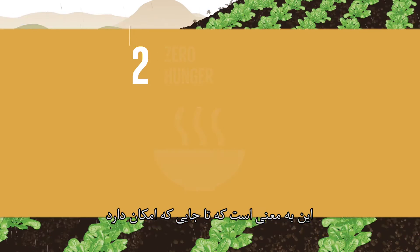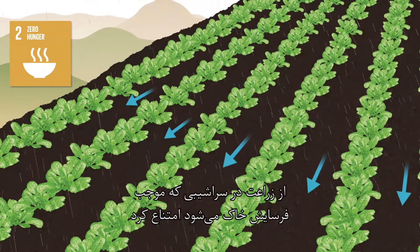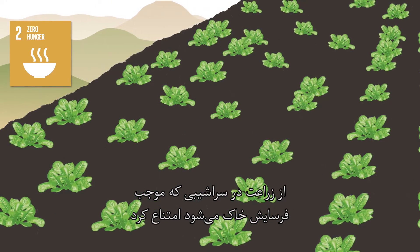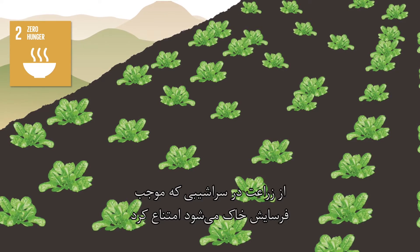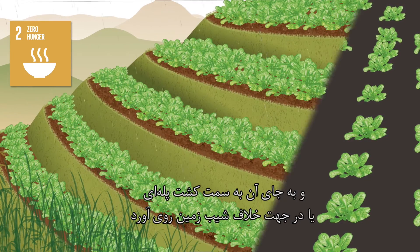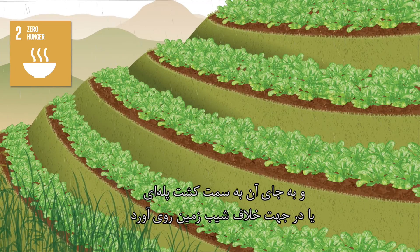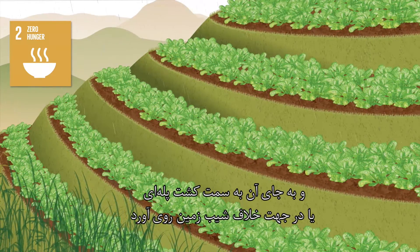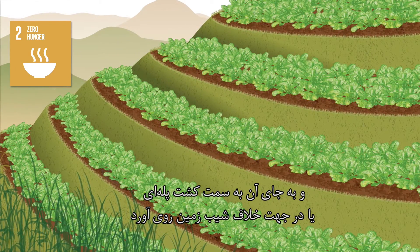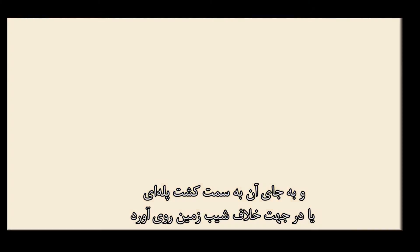This means that wherever possible, practices such as farming following the direction of the slope, which can cause soil erosion, should be substituted with sustainable practices like terracing or the construction of grass strips across the slope following the elevation contour lines of the land.